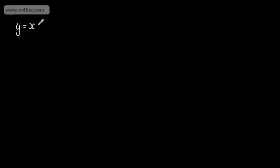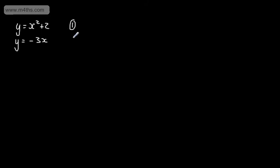Our first equation is y equals x squared plus 2, and the second equation is y equals minus 3x. This first one is non-linear as we have a term in x squared — I'll call that equation 1. The second is the linear equation, and I'll call that equation 2.